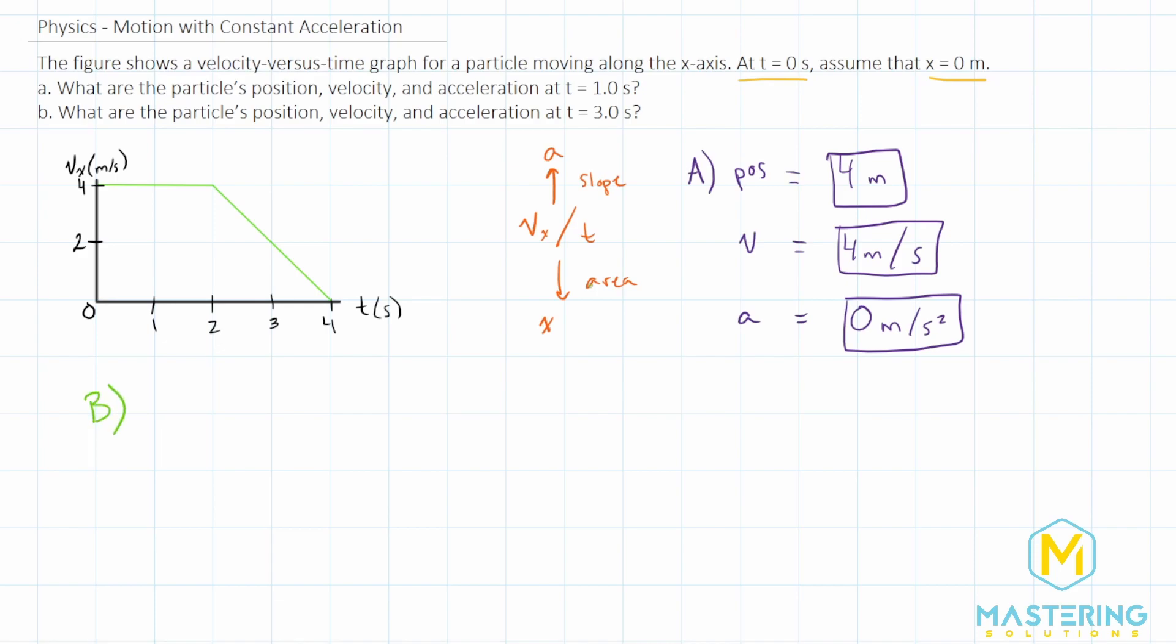This one's a little bit trickier, because now we have a square, we draw a little dotted line right here, we have a square, and we also have a triangle for the area that we have to solve for. So for up to two seconds, it's four by two. So it's gone eight. This is for the position, of course.